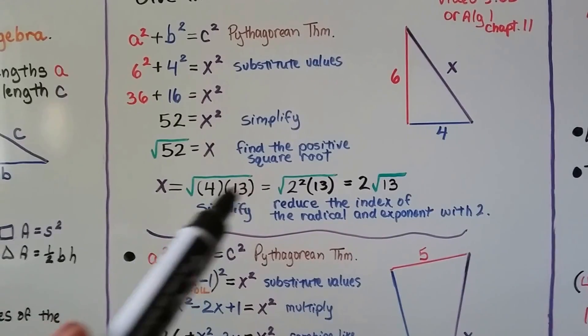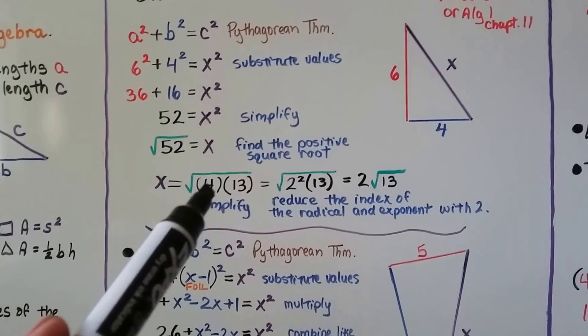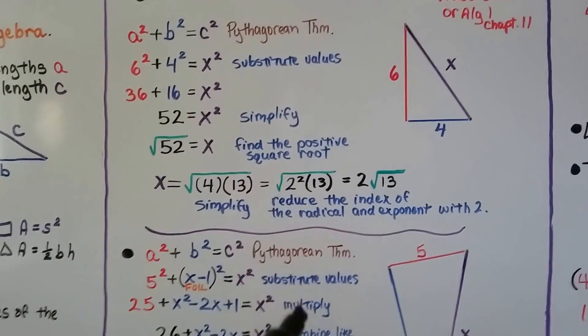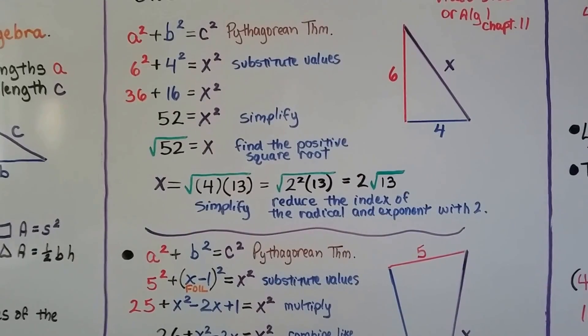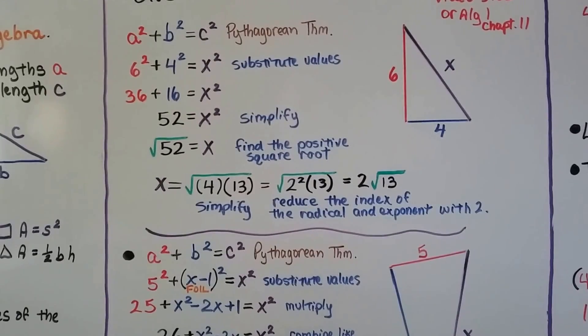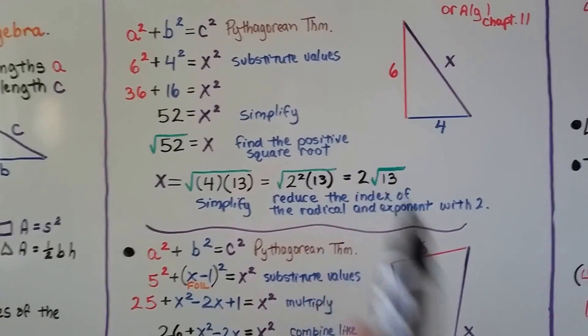Now, 4 times 13 is equal to 52. This 4 can be written as 2 squared. And we can reduce the index of the radical and exponent with 2. And we get 2 square root of 13.